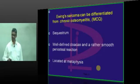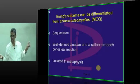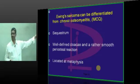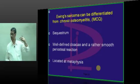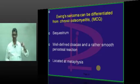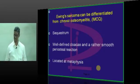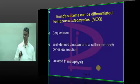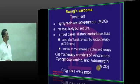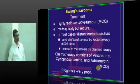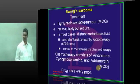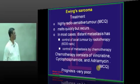Ewing sarcoma can be differentiated from osteomyelitis: sequestrum will not be present in Ewing sarcoma; well-defined cloaca and smooth periosteal reaction with metaphysis location suggest osteomyelitis. If sequestrum and cloaca are present, it is osteomyelitis. Treatment: highly radiosensitive — it quickly clears but recurs. In most cases, distant metastasis is controlled with 60,000 rads; control of metastasis by chemotherapy.